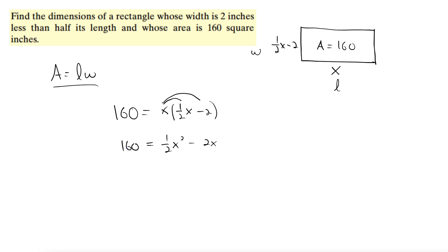So I'm going to clear the fractions. I can do this because there's an equal sign, by multiplying both sides by 2. Alright, so now we have 320 equals x squared minus 4x.